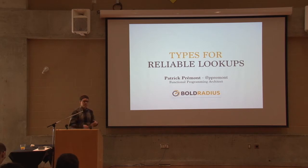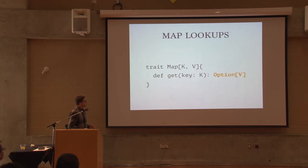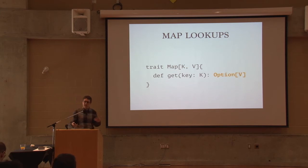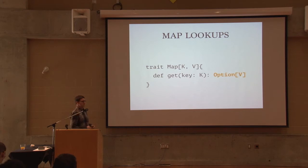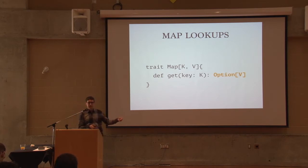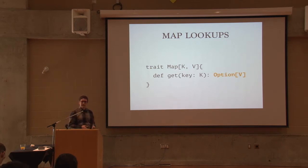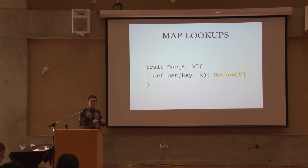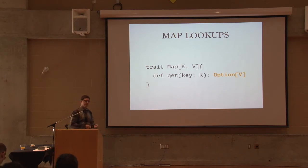Coming back to what problem we're trying to solve: this is the map trait in Scala, slightly simplified. The main method we're interested in is the get method that allows us to pass a key of type K and get back an Option of a value of type V. This Option is the problem, because you put something in a map and expect to get the value back when you pass the same key again, but now you've got to check whether it's there.